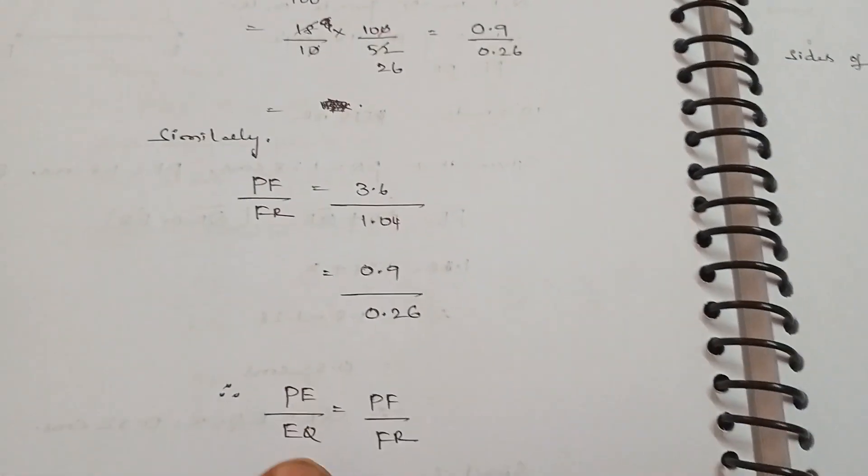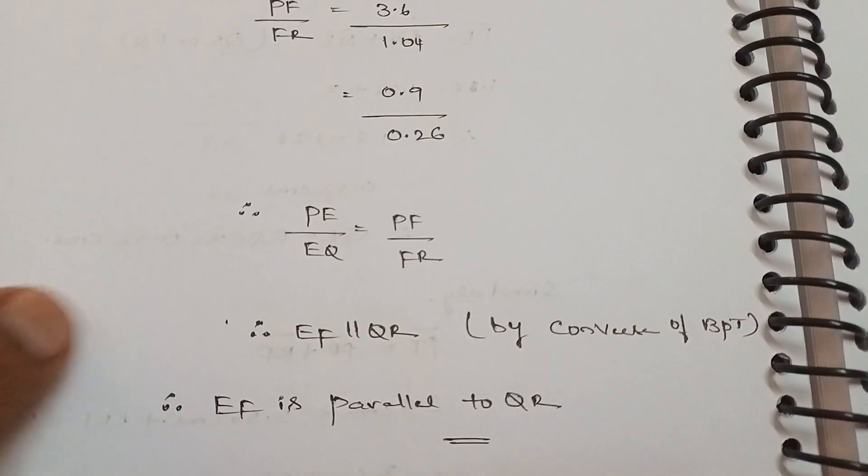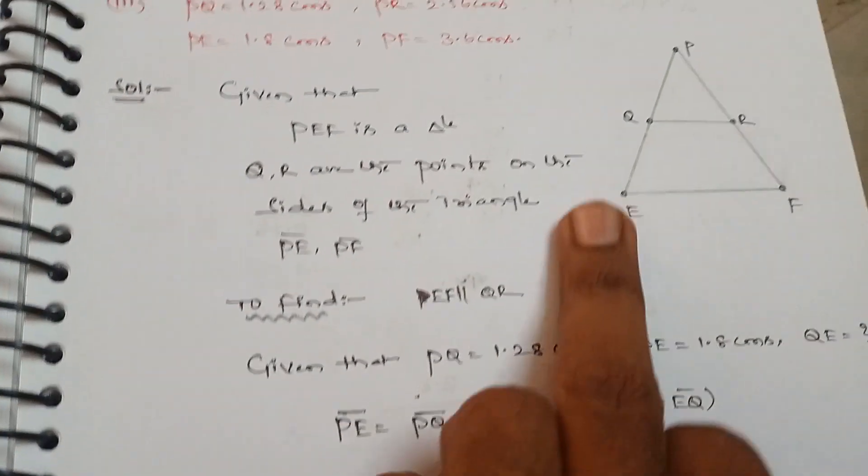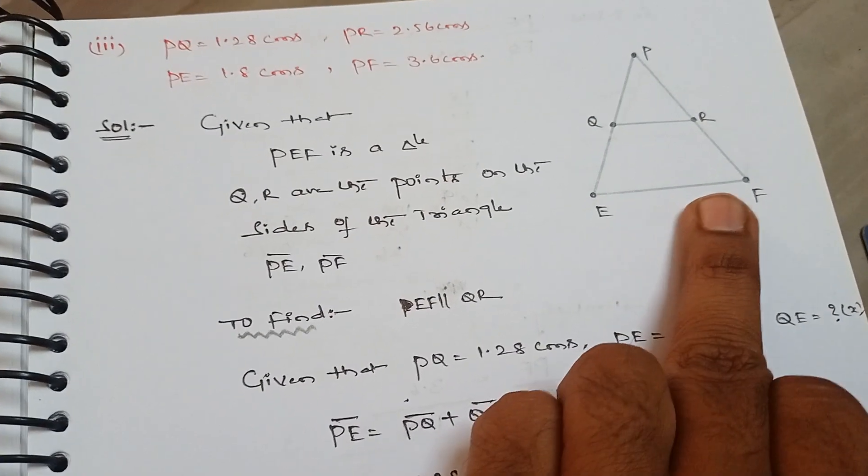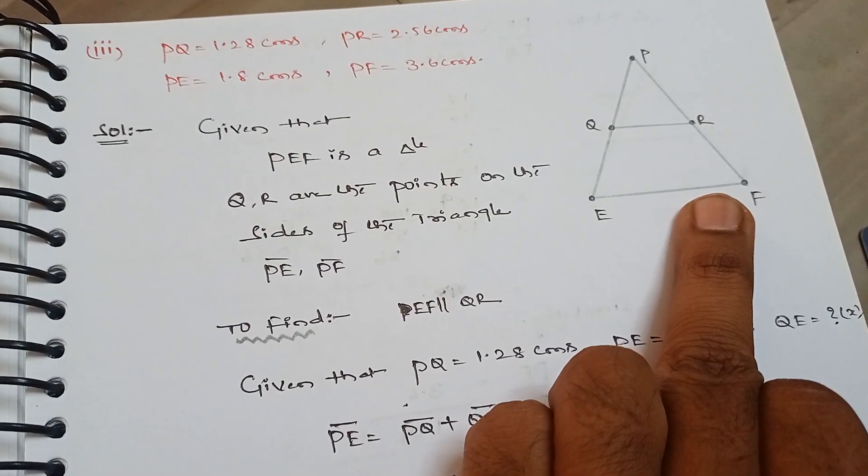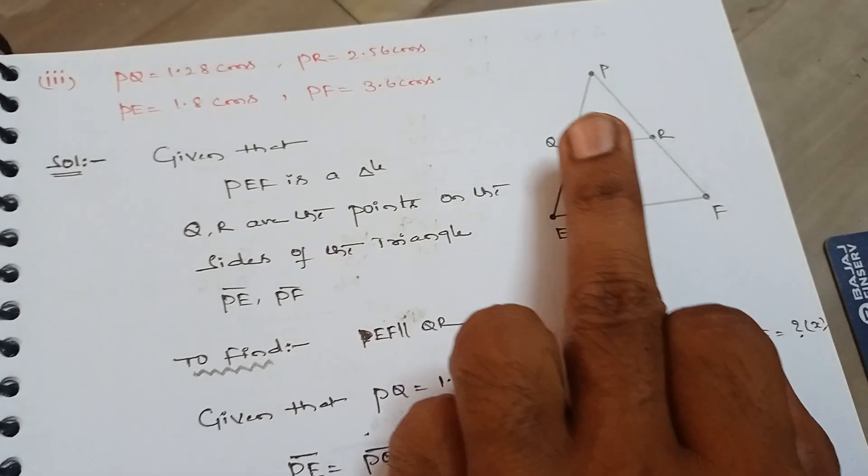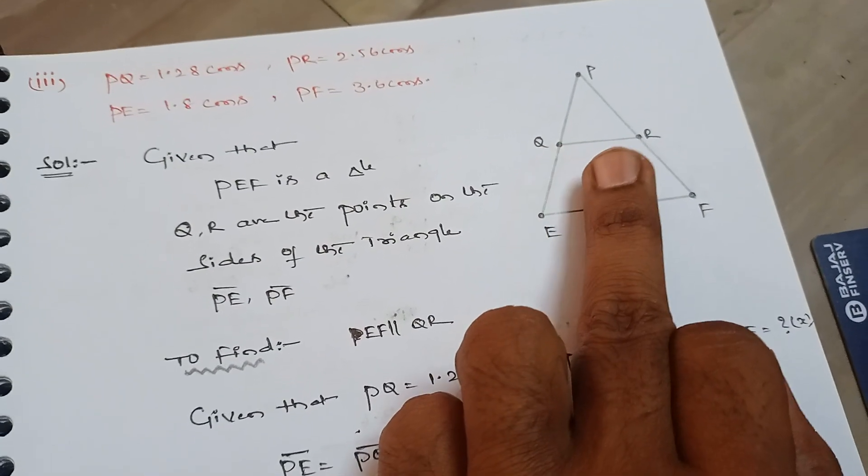Therefore, PE by EQ equal to PF by FR. Therefore, EF is parallel to QR. See, therefore QR line is parallel to EF, guys. Since it was parallel, therefore the line divides the other two sides in the same ratio.